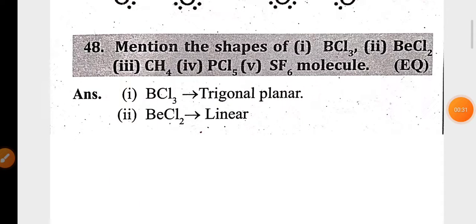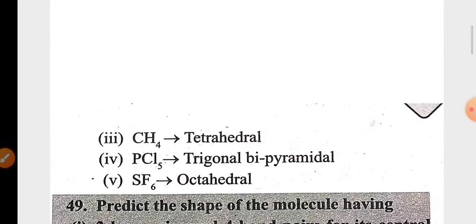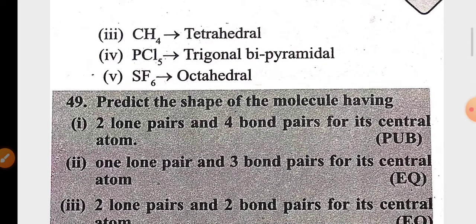The shapes of some molecules: boron trichloride is trigonal planar, beryllium chloride is linear, methane is tetrahedral, phosphorus pentachloride is trigonal bipyramidal, and sulfur hexafluoride is octahedral.